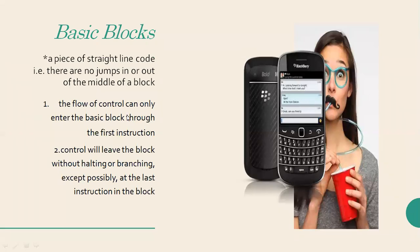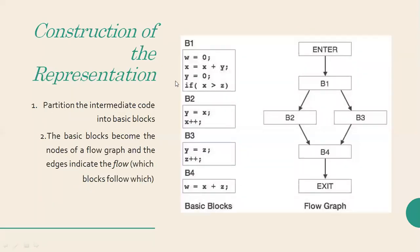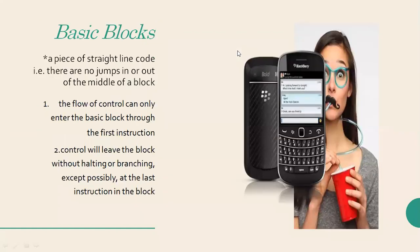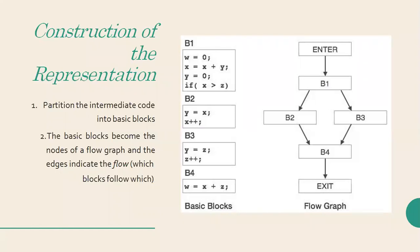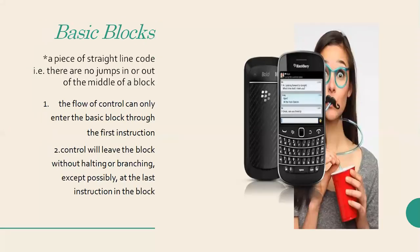The flow of control can only enter the basic block through the first instruction. In basic block one, w = 0 is the first instruction, and with that instruction the flow of control starts. The control will leave the block without halting or branching, except possibly at the last instruction in the block. These are the set of rules for basic blocks.